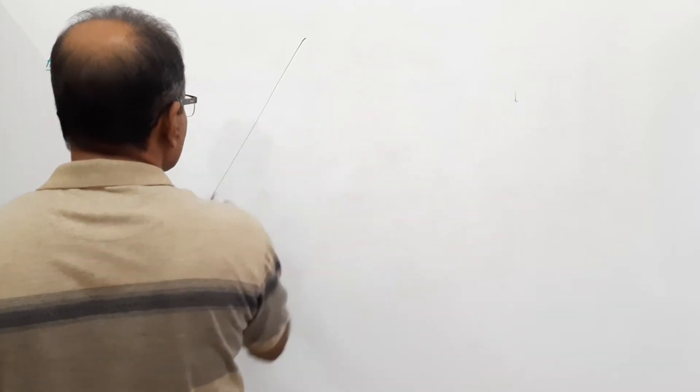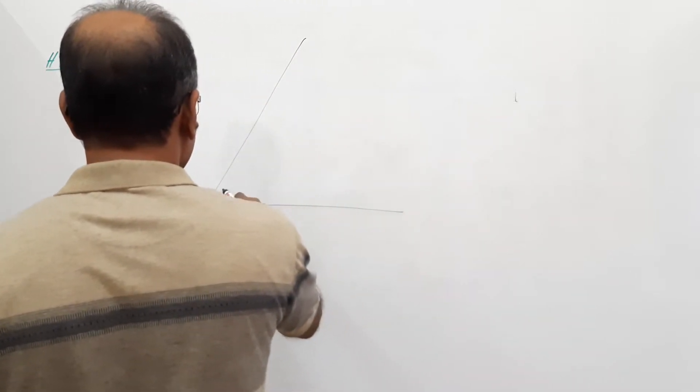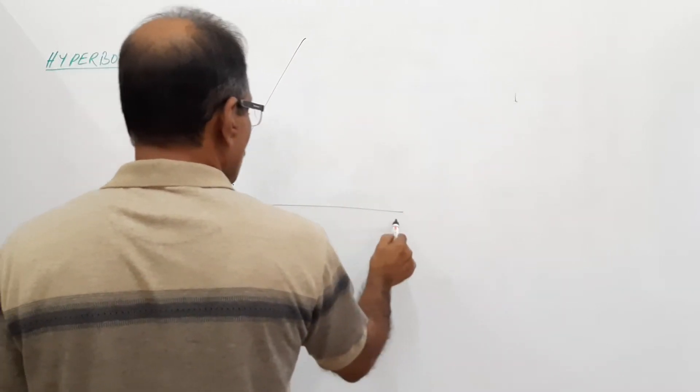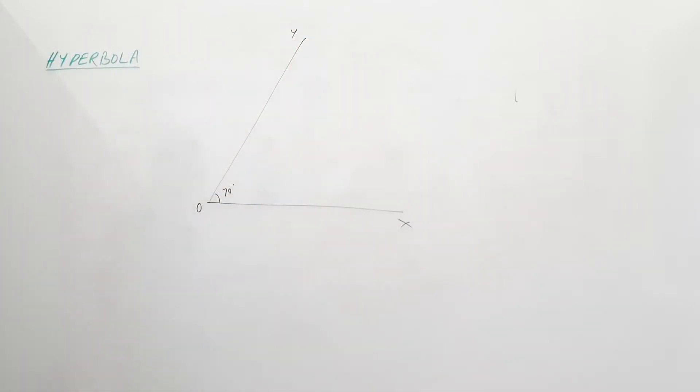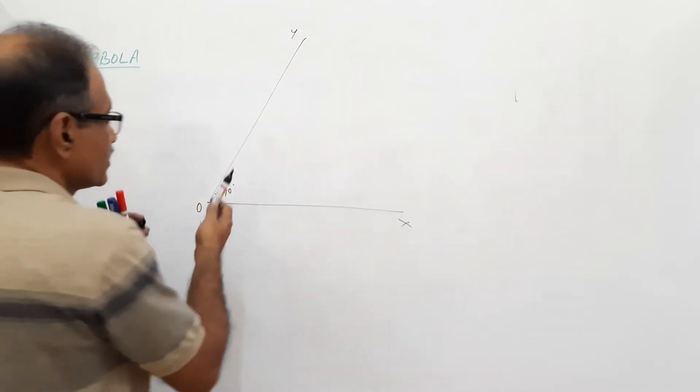Two asymptotes of a hyperbola are at 70 degrees, O, X, Y. Just follow the next line and the point where the hyperbola is.